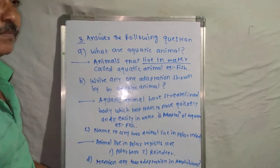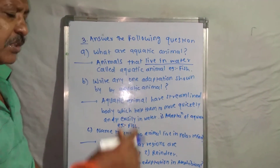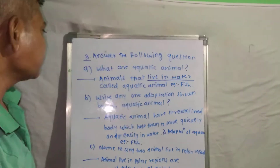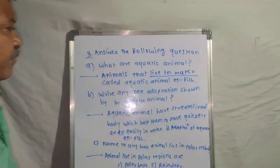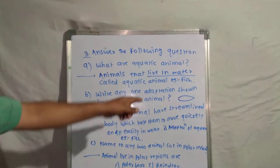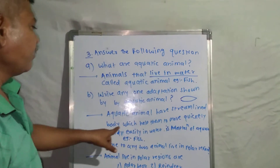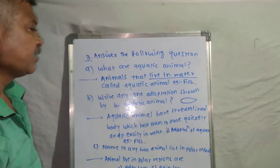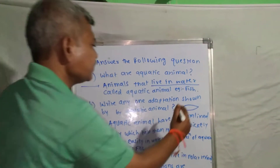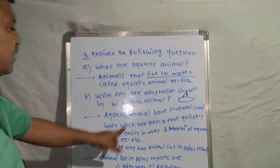The second question: 'Write any one adaptation shown by aquatic animals to live inside water.' Aquatic animals have a streamlined body — shaped like a stream of water, or a boat shape. This streamlined body helps them to move quickly and easily in water, allowing fish to swim easily inside the water.